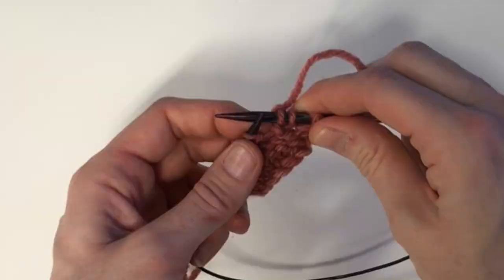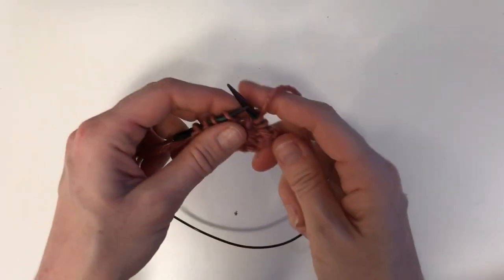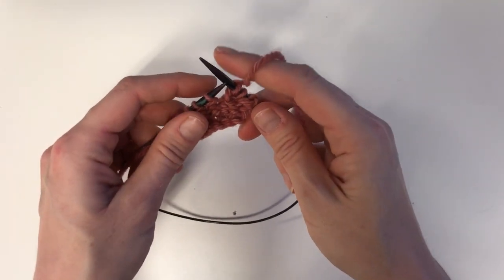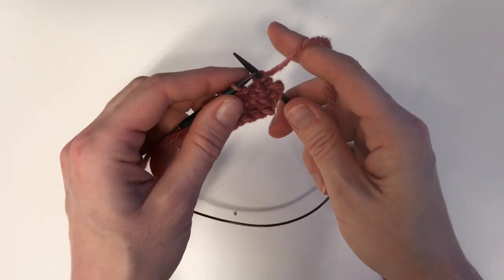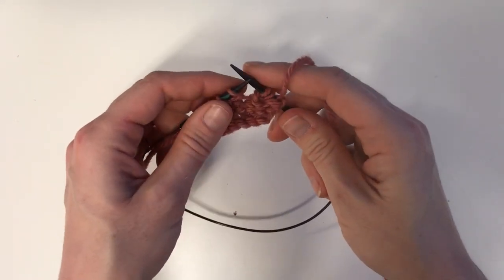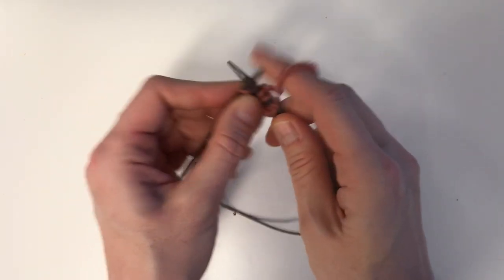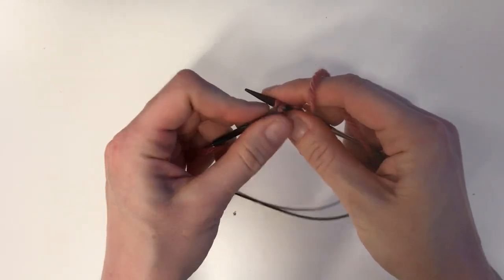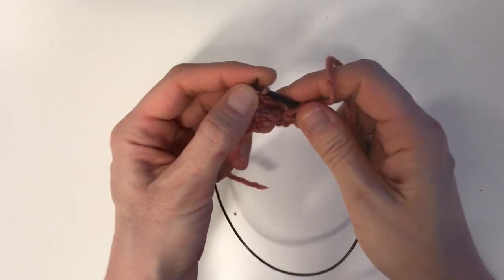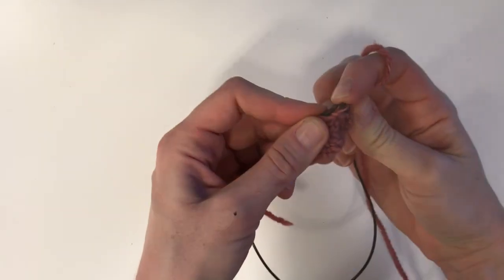We'll try it one more time. So you're going to slip the first two stitches knitwise. You're going to reverse their order and get them both back on the left hand needle. The first one slipped purlwise,